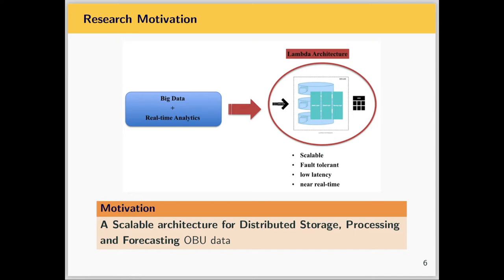In order to tackle these challenges and valorize the OBU data we are collecting, we aim at designing a scalable architecture capable of distributed storage and processing, and also able to forecast traffic flow and average speed in the short term at the transportation network scale. As you can see in the picture, this is called the Lambda architecture, which addresses both the big data and real-time nature of the data, with inherent noise tolerance, low latency, and real-time processing and visualization capabilities.